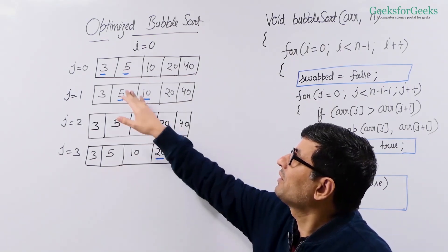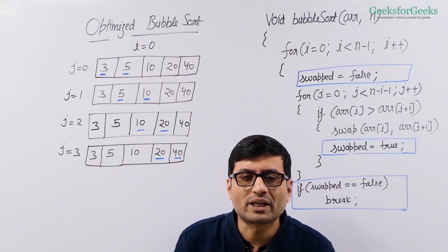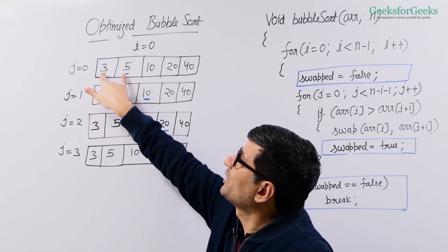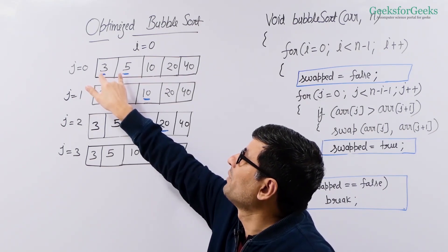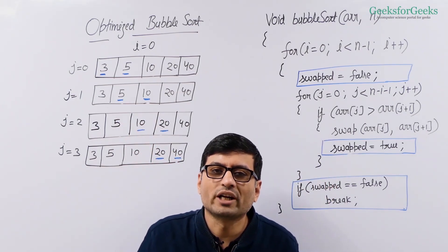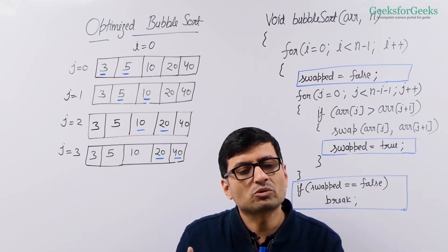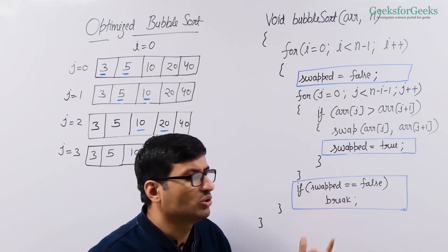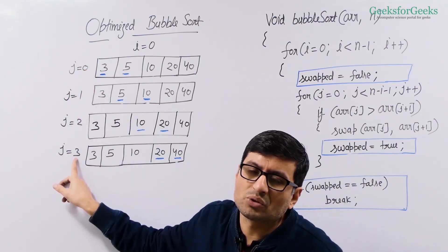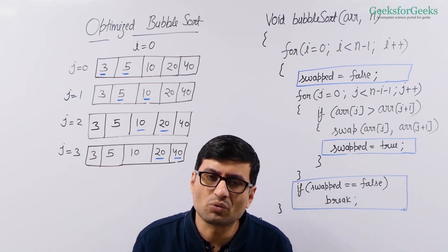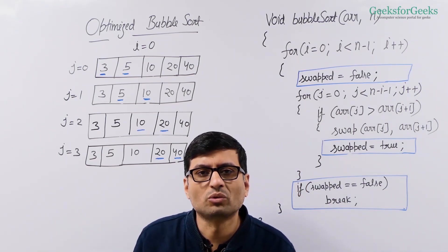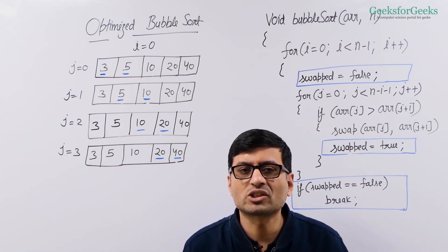Let's understand this with an example using a sorted array. When you run the first pass with i equal to 0, you run the loop for j equal to 0 to 3. For each j, the elements are already in order, so swapped remains false in all the iterations because you never do a swapping. If swap remains false, you break out of the whole function and you are done with the sorting. So if your array is sorted, you are running a loop only from 0 to n minus 2, which means it does linear work. The swapped variable enhances performance especially when your array is sorted, almost sorted, or becomes sorted in the middle — it does not take square time in those cases.